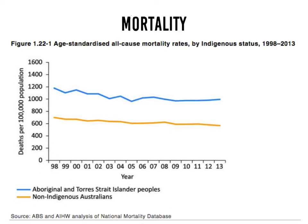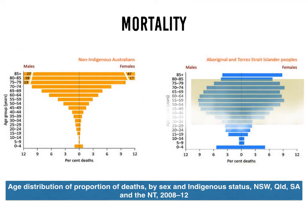This graph also shows mortality, but it compares two different groups: the indigenous population with the non-indigenous population. Between 1998 and 2013, a higher proportion of indigenous people have died than non-indigenous people, so the mortality rate for indigenous people is higher. A further graph shows that the Aboriginal and Torres Strait Islander population has a larger number of people dying between the ages of 40 and 60 than the non-indigenous population, which relates back to life expectancy.